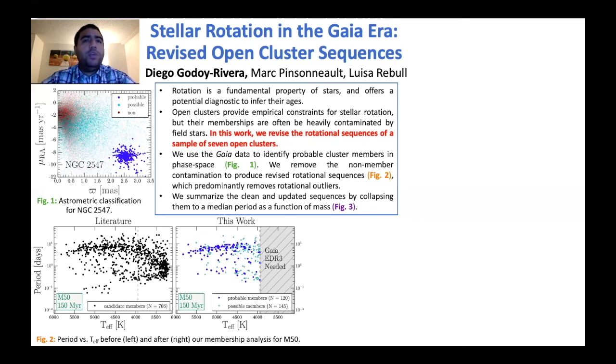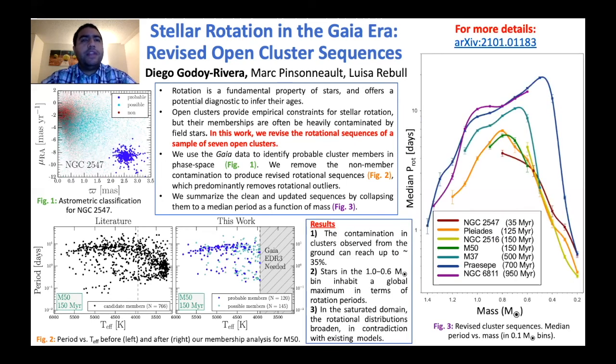This is illustrated in Figure 2 in the period versus temperature diagrams. We do this for all the clusters in our sample and produce revised rotational sequences. These are summarized in Figure 3, shown as median rotation period as a function of mass and age. For more information, please check out my poster as well as my recent paper with Mark Pinsonault and the Louis article. Thank you for your attention.